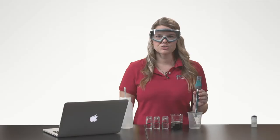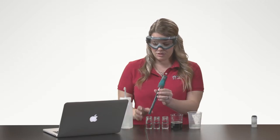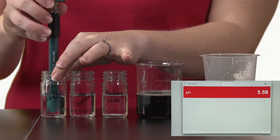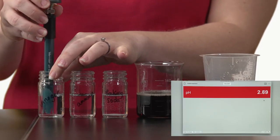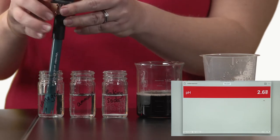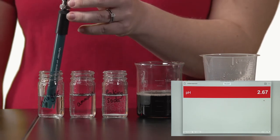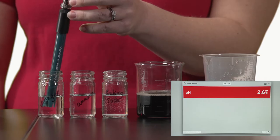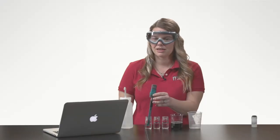The first solution I want to measure is going to be vinegar. I place the pH electrode in the vinegar and provide a little bit of stirring and monitor the pH reading. Once it's stable, then I'll record this pH value in my laboratory notebook.